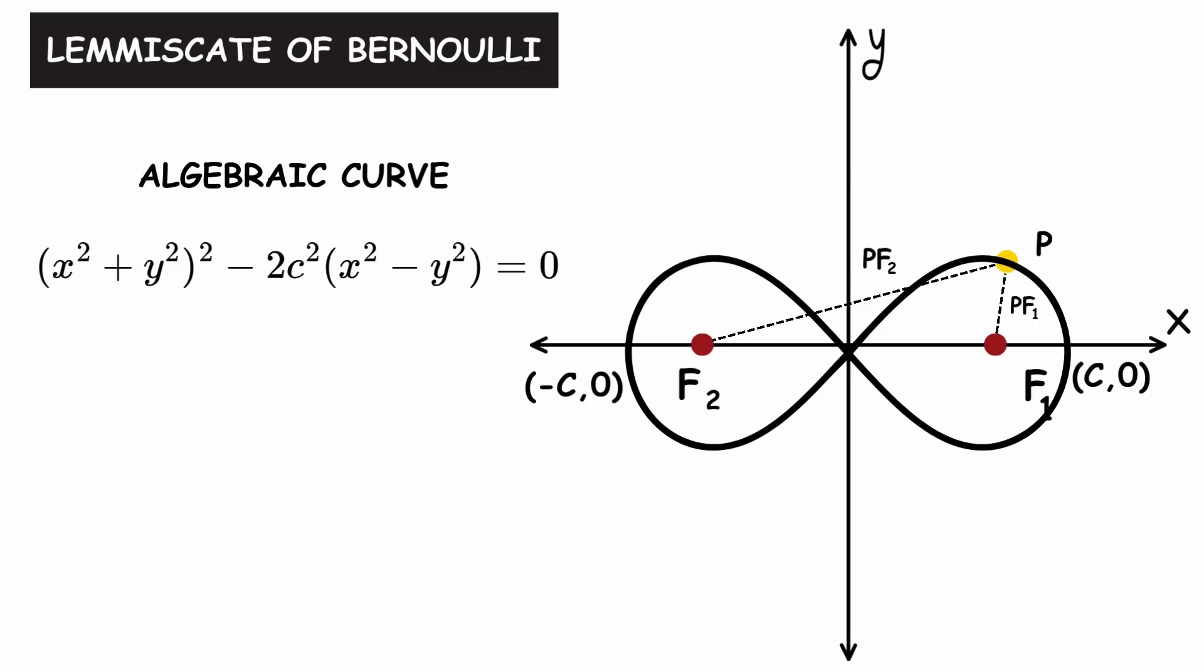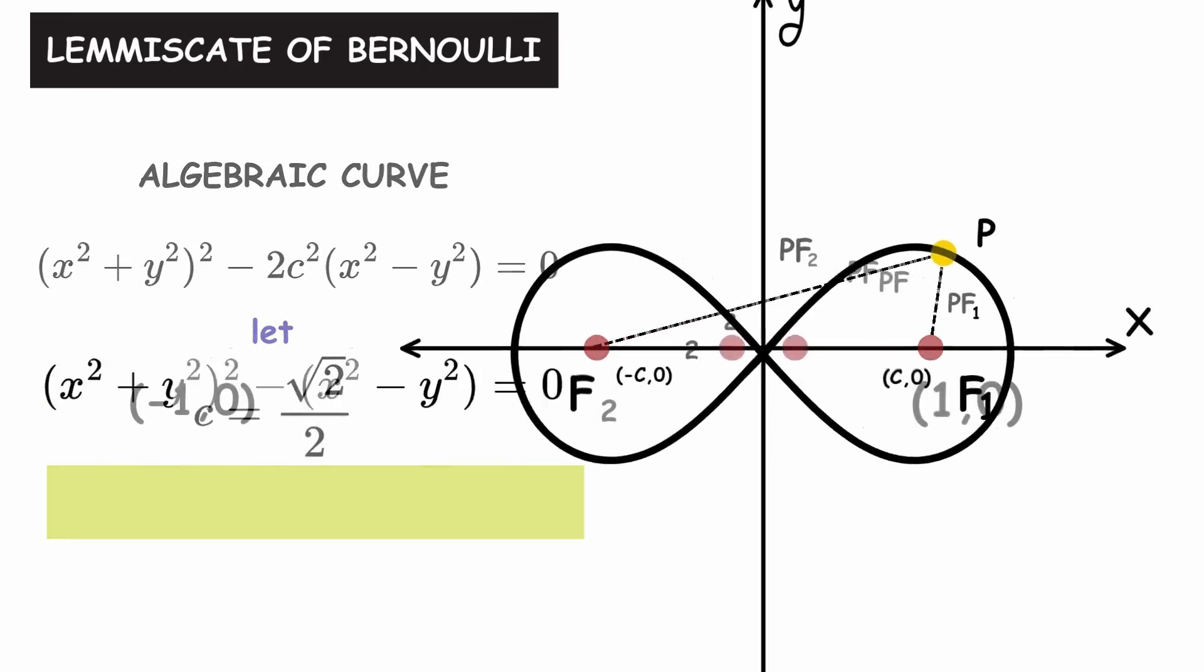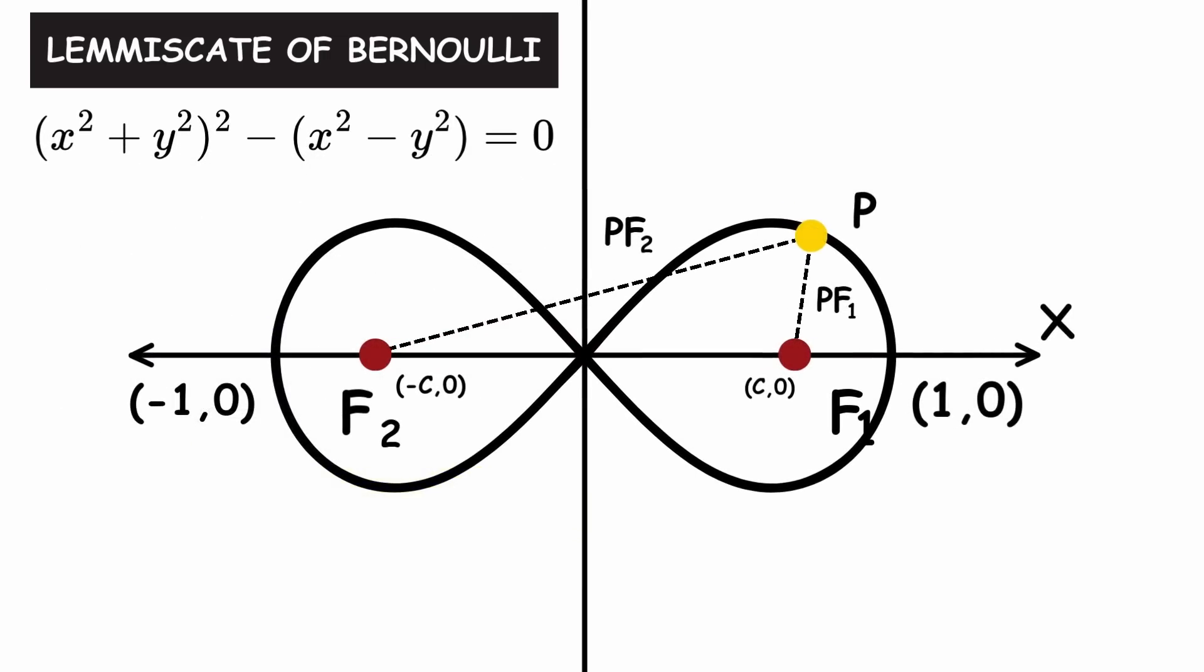Now, let's consider what happens if we let c equals the square root of 2 over 2. The resulting Lemniscate is given by this equation. And it passes through the points negative 1, 0 and 1, 0.